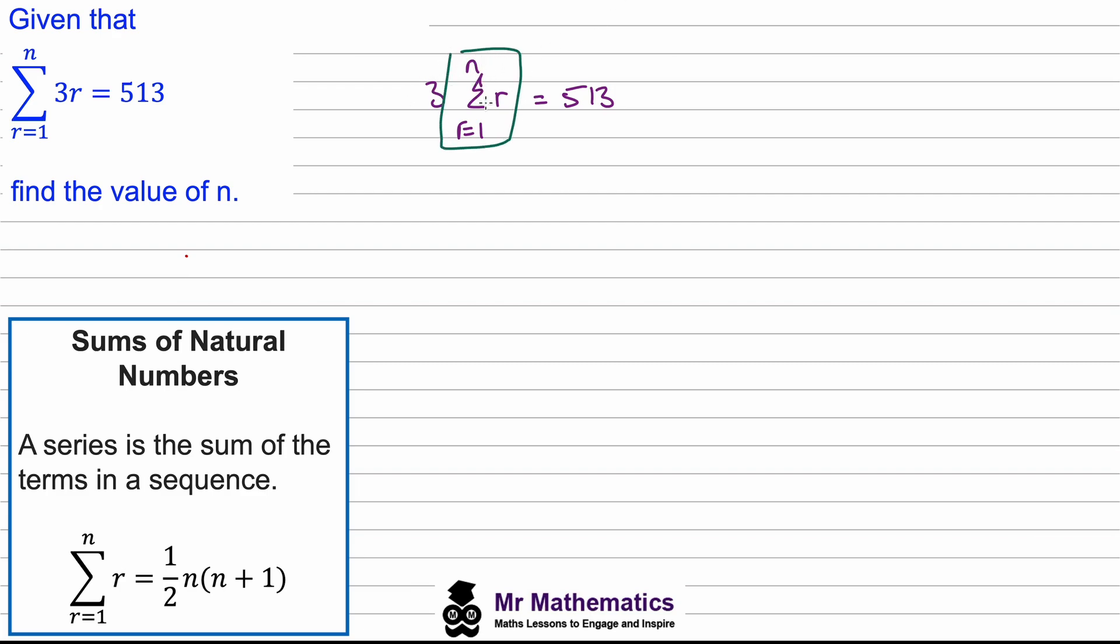Substituting these values into our formula, then we'll have three multiplied by one half of the n which we're trying to find, multiplied by n plus one, and this will equal 513.